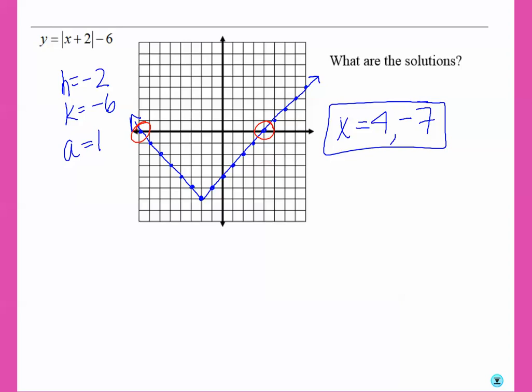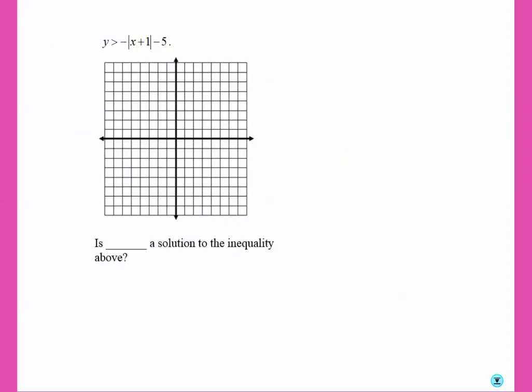So now let's try an inequality. We're going to still start off by using a, h, and k. a is negative 1, h is negative 1, and k is negative 5.